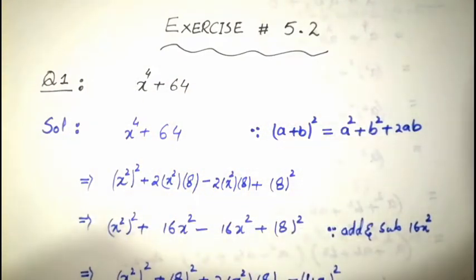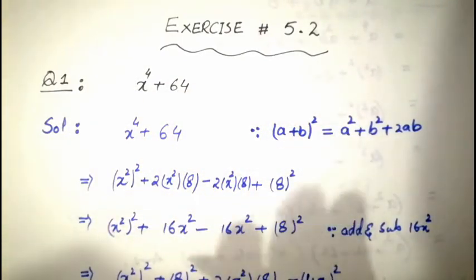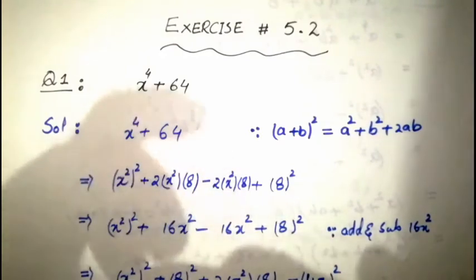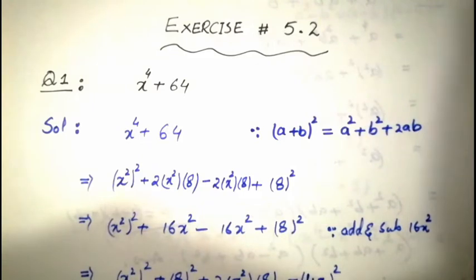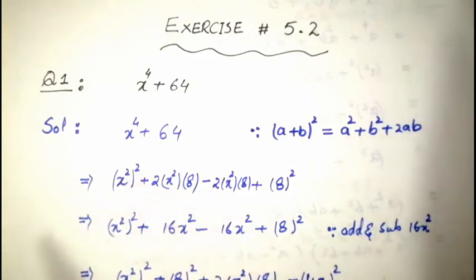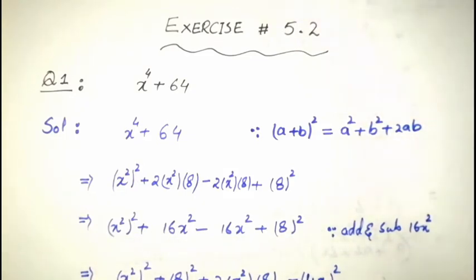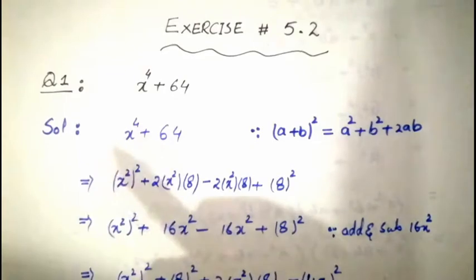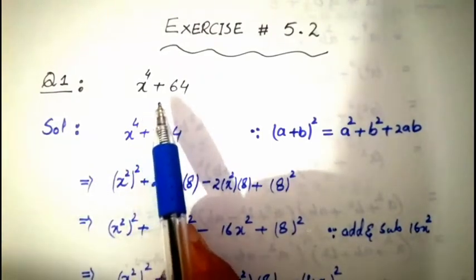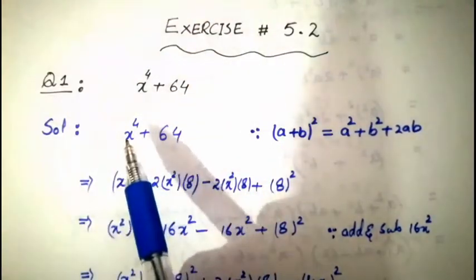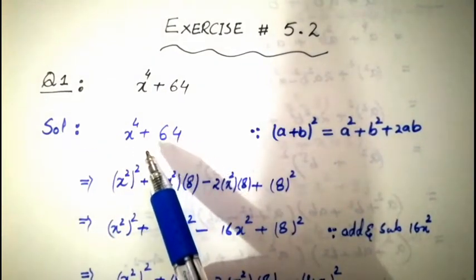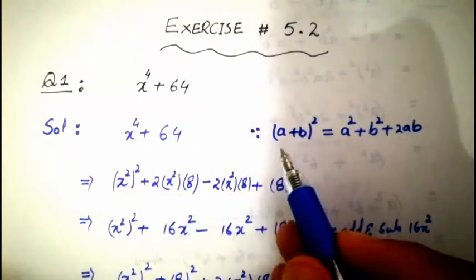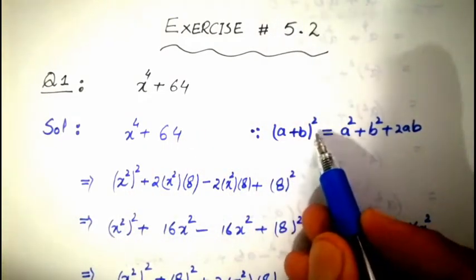We are going to start 5.2 from chapter 1. I have already solved question number one. Let me expand it for you. The question is: x to the power four plus sixty-four. We need to factorize this. We have a formula: (a + b)² = a² + b² + 2ab.